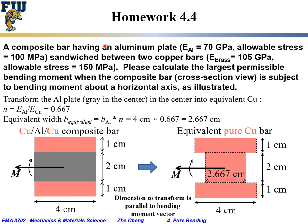Homework 4.4: A composite bar has an aluminum plate sandwiched between two copper bars (one on top, one on bottom). The elastic modulus for aluminum E_Al = 70 GPa with allowable stress 100 MPa, and for copper E_Cu = 105 GPa with allowable stress 150 MPa.